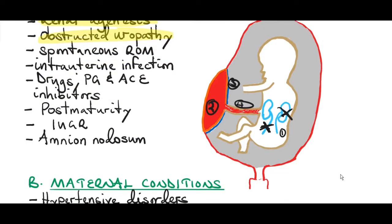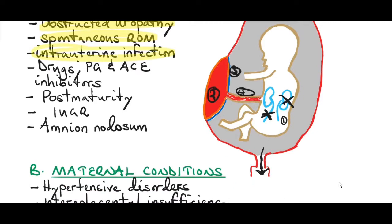Another cause is spontaneous rupture of membranes — the amniotic sac breaks spontaneously and amniotic fluid leaks out. Intrauterine infections can also cause oligohydramnios, as well as polyhydramnios. Drugs like prostaglandin inhibitors and ACE inhibitors act on the kidneys to reduce urine output in both the mother and fetus, resulting in reduced amniotic fluid production.